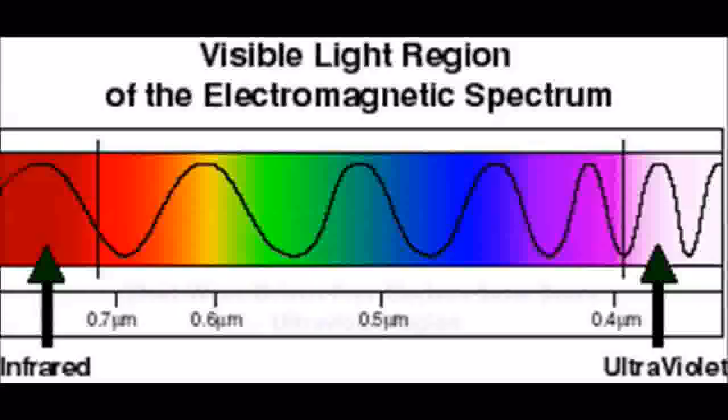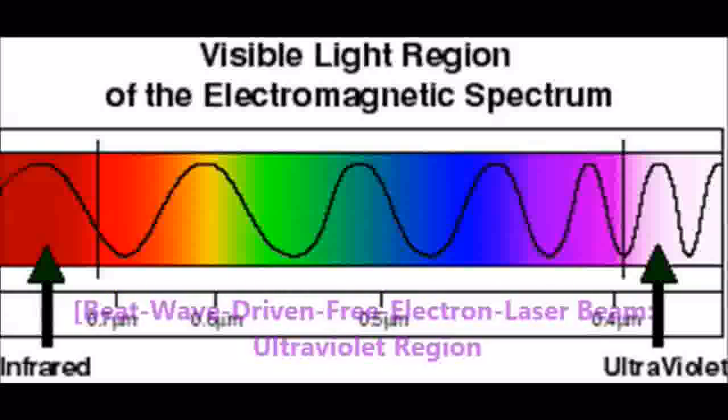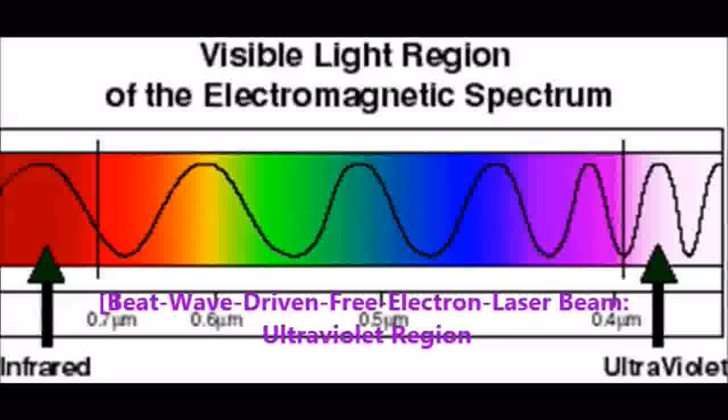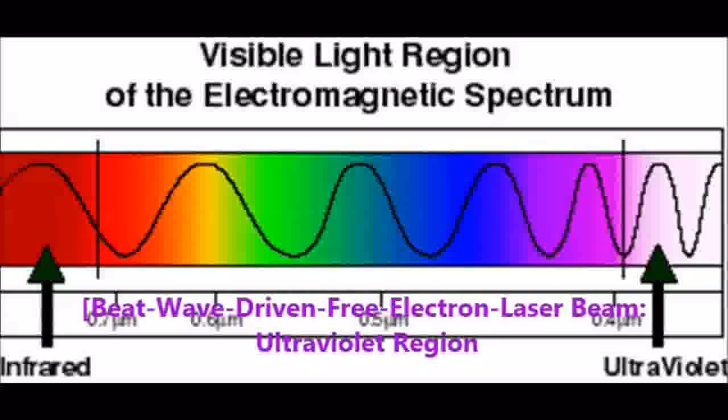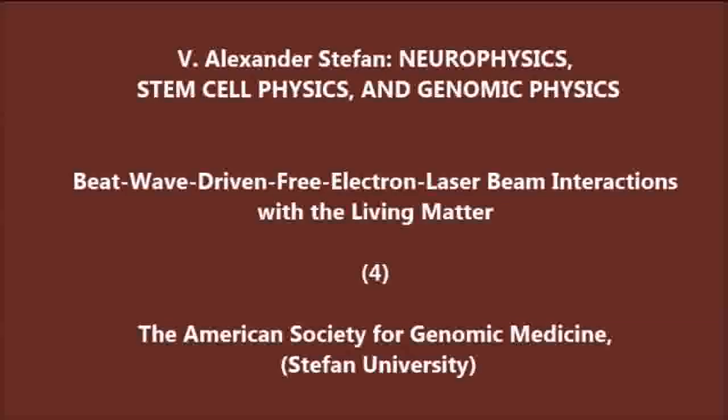The laser photons are guided through optical fibers so as to reach deep brain tissue and control it. The precision is subcellular, meaning the laser photons of different colors can precisely interact with specific targets within a cell, such as organelles, nucleus, and other bioentities within the cell.